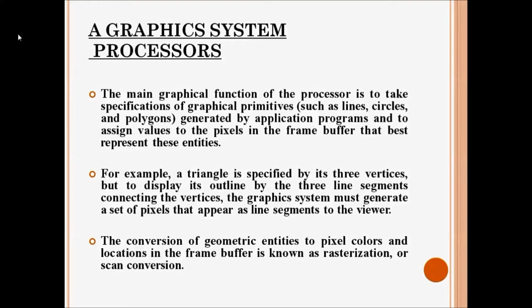If I want to generate a rectangle, I need four vertices and four line segments. Those line segments and vertices will be represented in the form of pixels. That conversion of geometrical primitives into pixel form is known as scan conversion or rasterization.